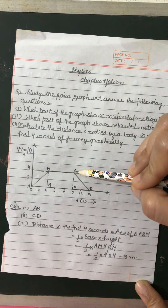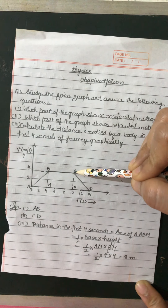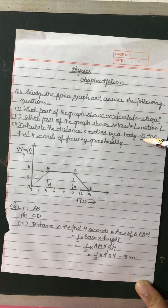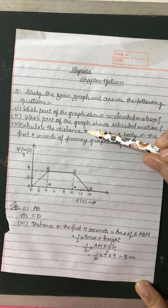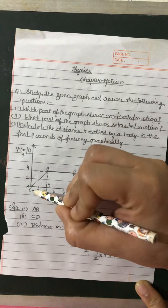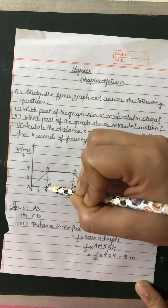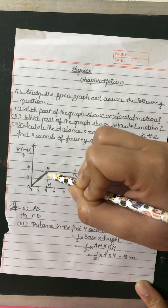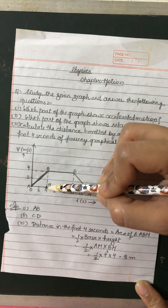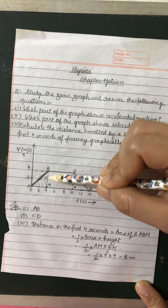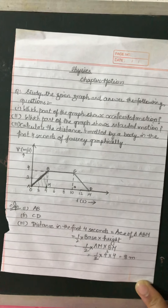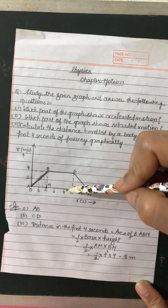If the question about constant speed had been asked, BC is showing constant speed, or you can say zero acceleration, as there is no change in velocity. Now see the third part: calculate the distance traveled by the body in the first four seconds of the journey graphically. We need to find the distance traveled from zero to four seconds. This is a velocity-time graph, and the area under the velocity-time graph represents distance.